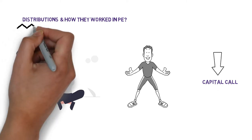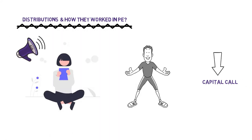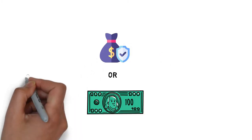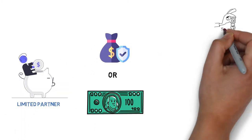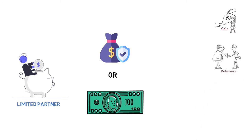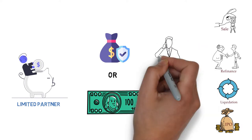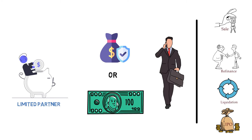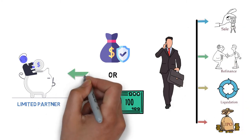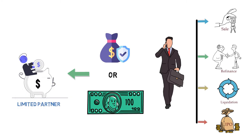So let's begin. Distribution is the transfer of cash or securities to a limited partner resulting from the sale, refinancing, liquidation, or IPO of one or more portfolio companies in which the general partner chooses to invest. Basically, the amount dispersed to the limited partners in a private equity fund is known as distribution.